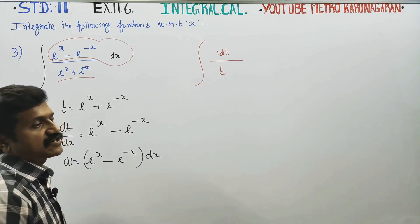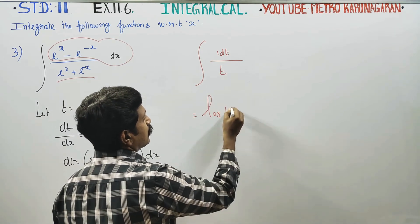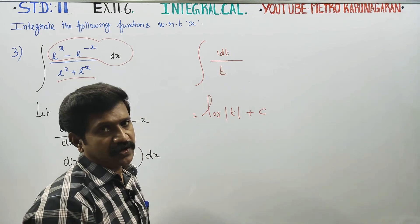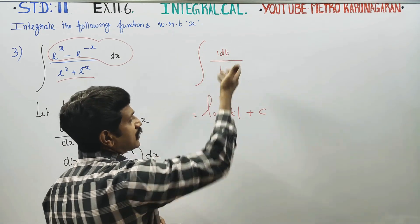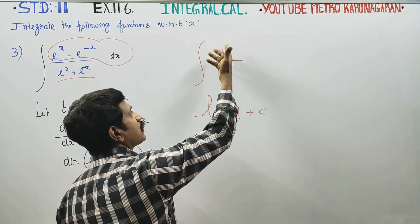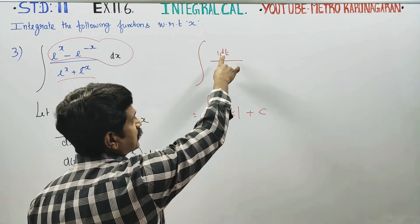We have 1 by T. Since 1 by X differentiates to log X, this integrates to log T plus C. With respect to T, 1 by T integrates to log T.